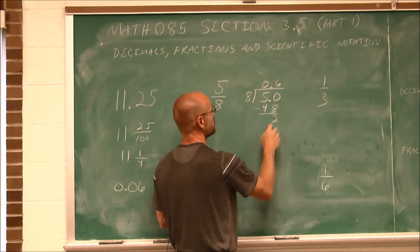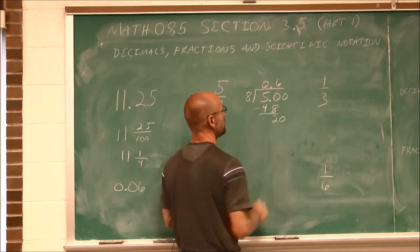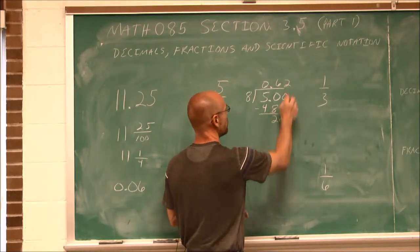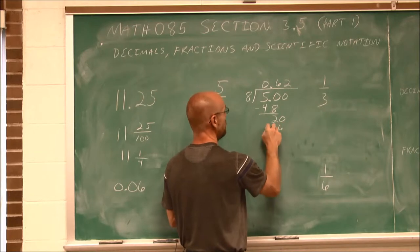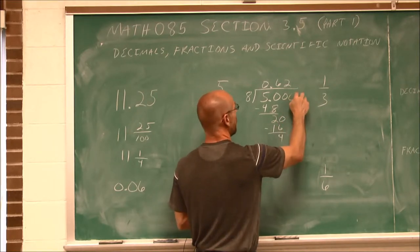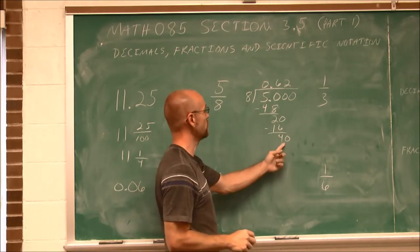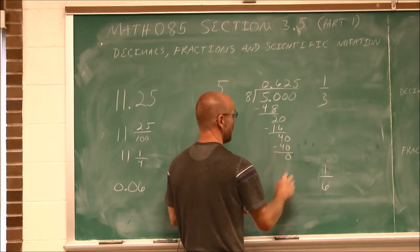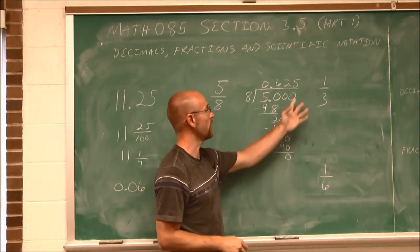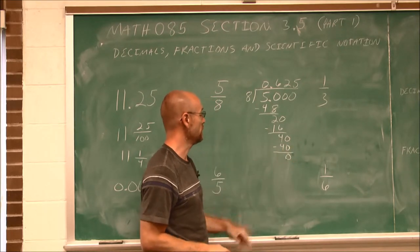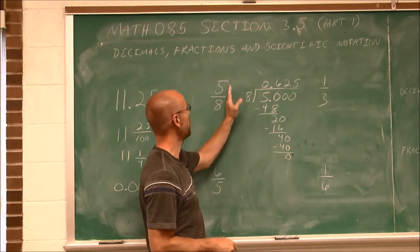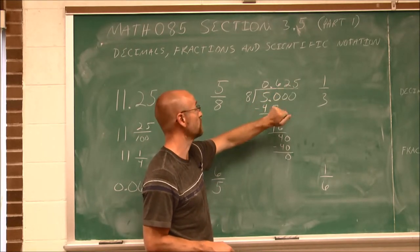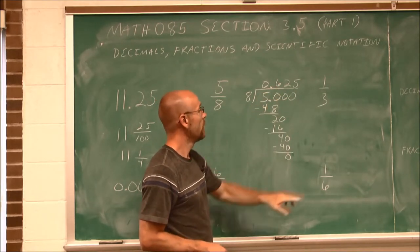If I find that difference, I get 2. I need another 0. 8 goes into 20 twice, which would be 16. That difference is 4. I bring down another 0. 8 goes into 40 5 times, which is 40. Now I have no remainder. So we find that 5 eighths is equivalent to 0.625.